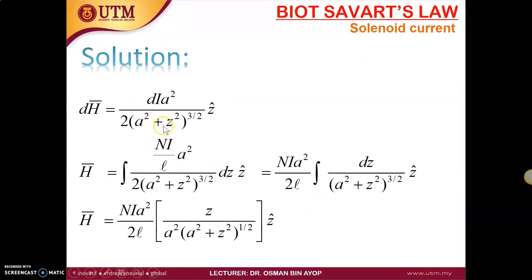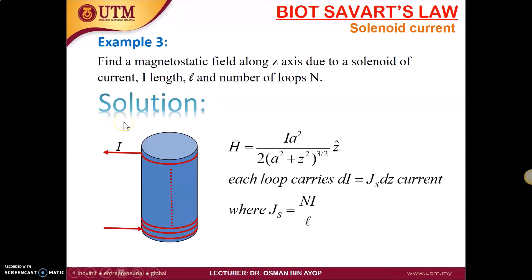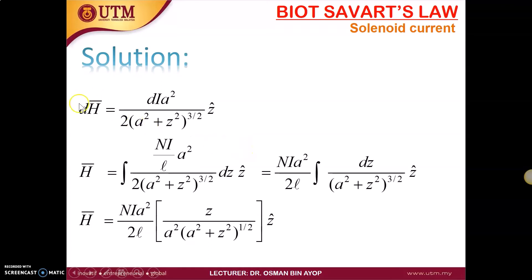This is a modification for our i, because this is the solution for a single loop. If we have multiple loops, we have to change to dh. When we have dh here, we have di, where di equals Ni over l dz. To find the total magnetic field contributed by the many loops, we have to do integrations towards the z-axis direction.